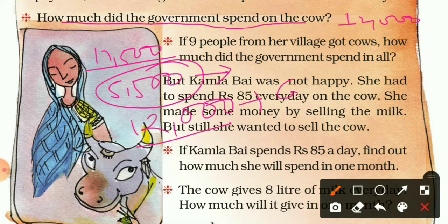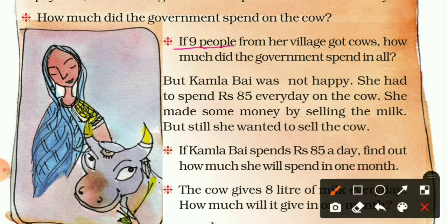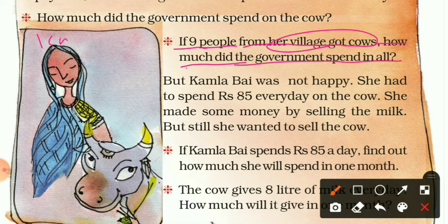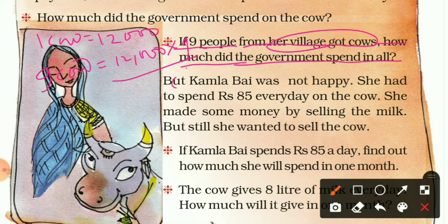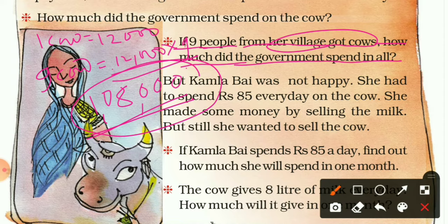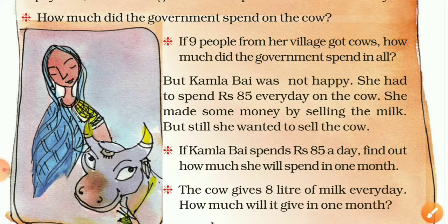If nine people from her village get cows, how much did the government spend in all? The government gives twelve thousand rupees per cow, and nine people are taking cows, so we calculate: 12,000 × 9. Nine zeros are zero, nine zeros are zero, 9 × 2 = 18 — carry 1; 9 × 1 = 9, plus 1 = 10. So the government pays one lakh eight thousand rupees for nine cows.